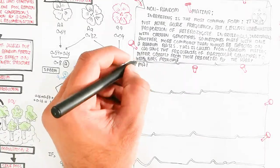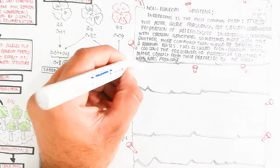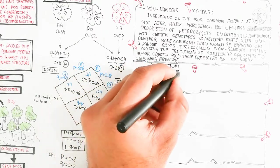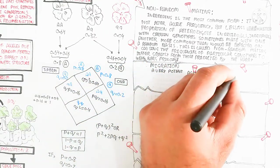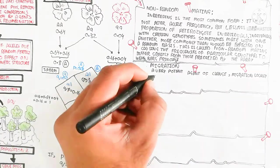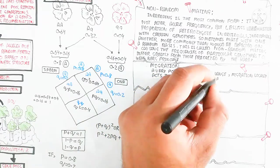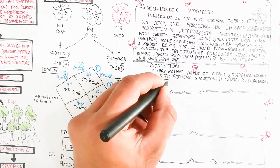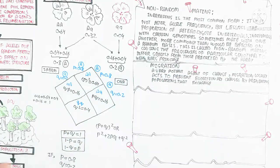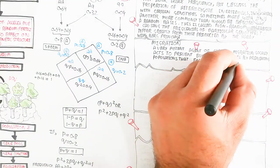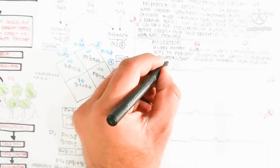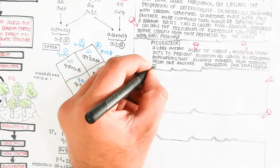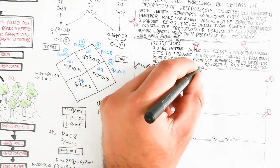Migration is also a very important agent of change. Migration locally acts to prevent evolutionary changes by preventing populations that exchange members from diverging from one another. Emigration and immigration of members of a population cause disturbance in the gene pool. In this way the gene pool will be disturbed, the Hardy-Weinberg theorem will be disrupted, and evolution will occur due to the introduction of new genes from another population.